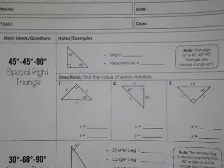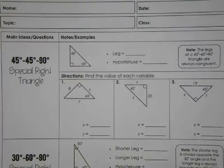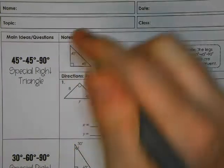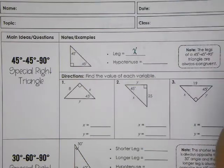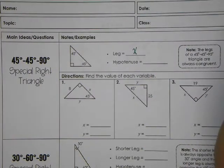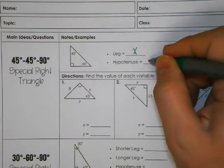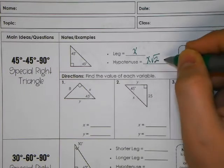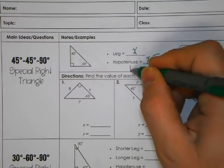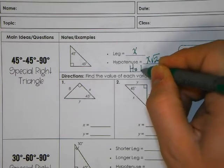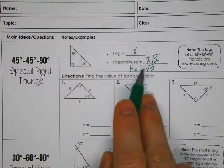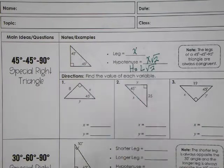Let's come back to our rules. The length of the leg can be anything — we'll call that x. The hypotenuse, according to what I just showed, is going to be the length of the leg times the square root of 2. I like to say the hypotenuse is equal to the length of the leg multiplied by the square root of 2. You can keep it as x if you prefer — that's perfectly fine.